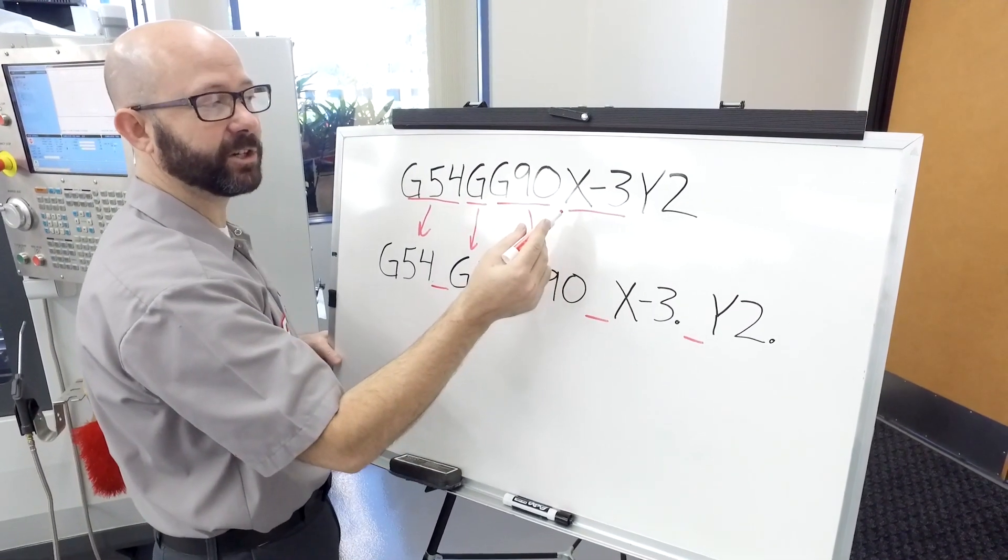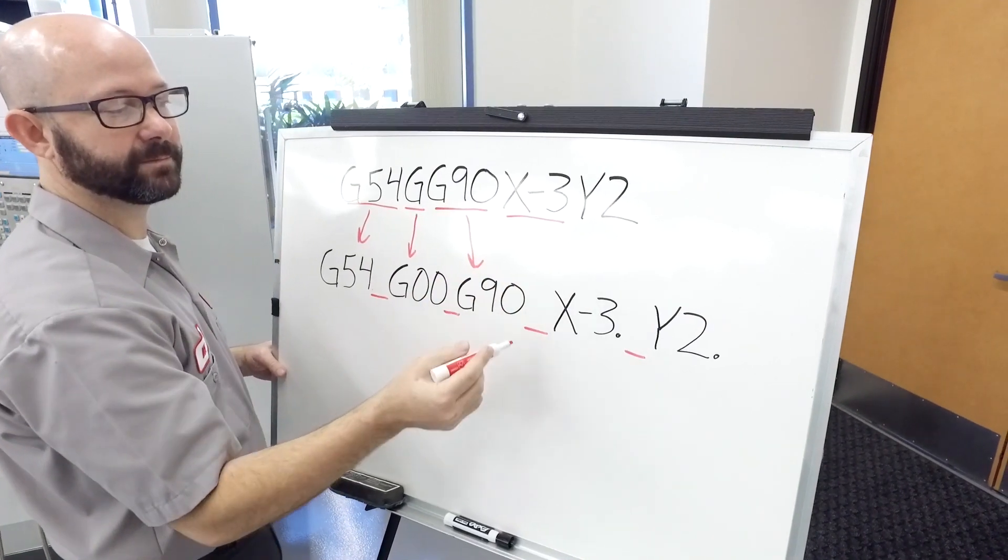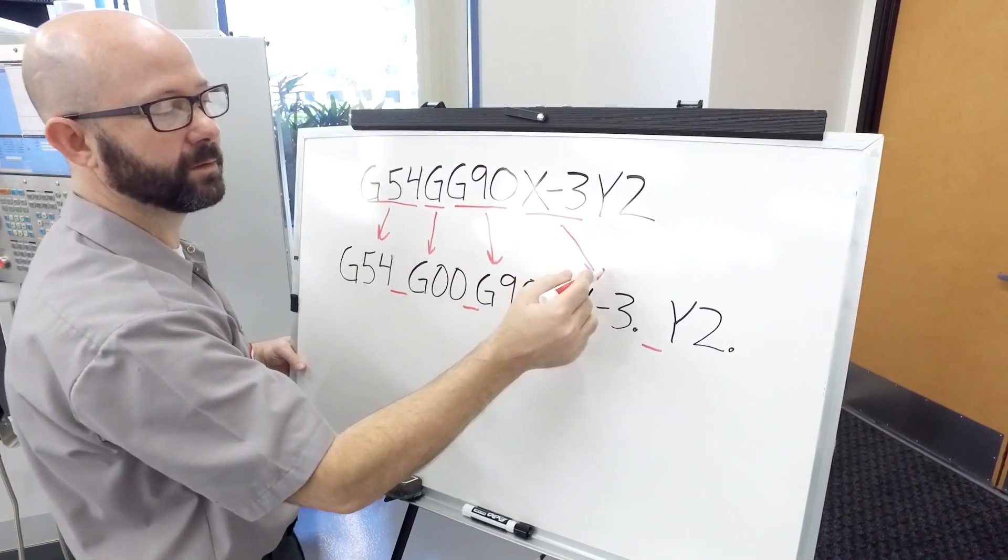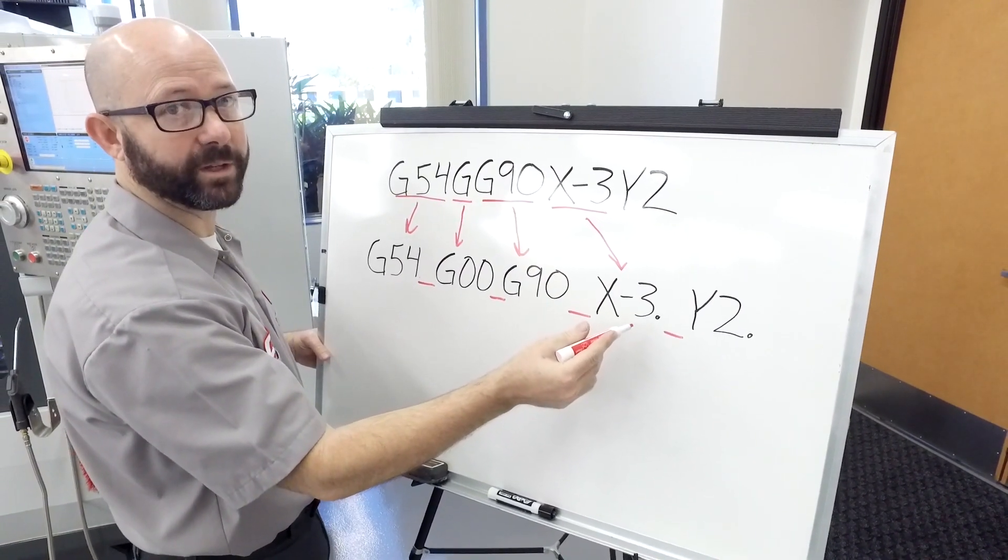Here I entered X minus 3 and the control added the decimal point for us.